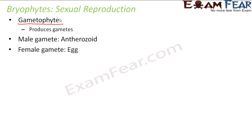The male gamete is biflagellated and motile — that means the antherozoid has two flagella and is capable of movement. Many male gametes are produced. When we talk about the egg, only one egg is produced and the egg is non-motile. Now let us look at the structures of the plant which actually produce the male gamete and the female gamete.